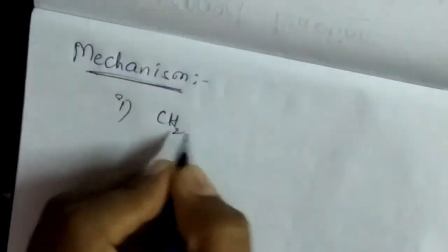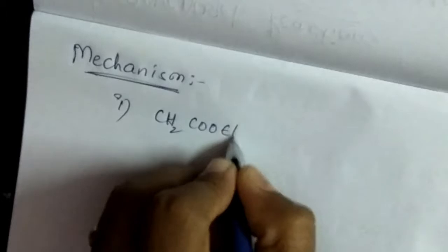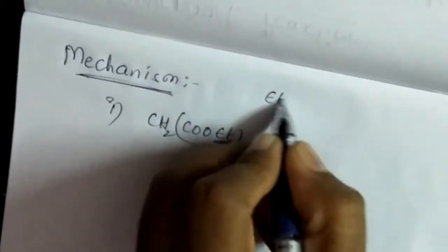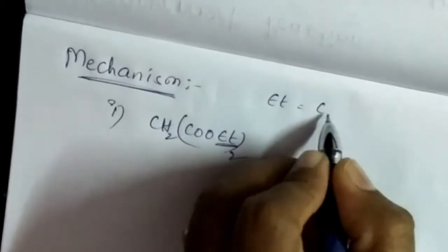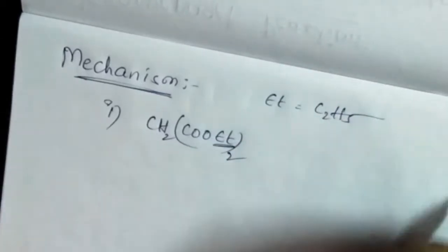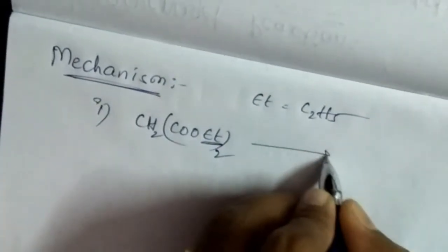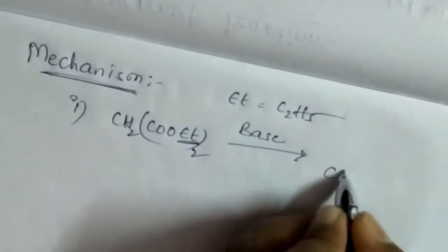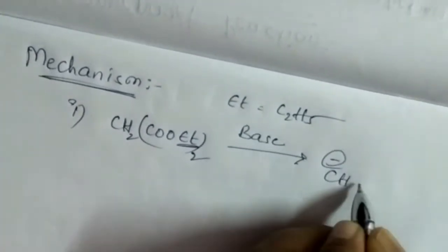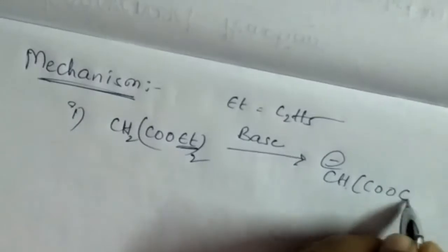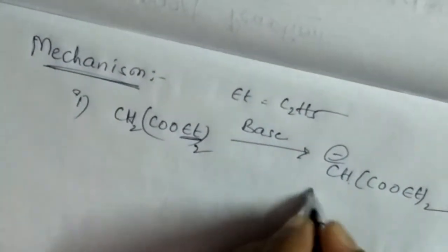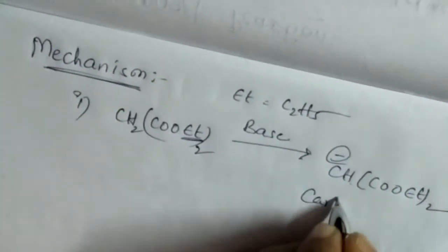Now see the mechanism. First, we take the active methylene group CH₂COOC₂H₅. It is reacted with base — C₂H₅ base — we treat it with base and we get a carbanion, that is CH⁻ carbanion ion.